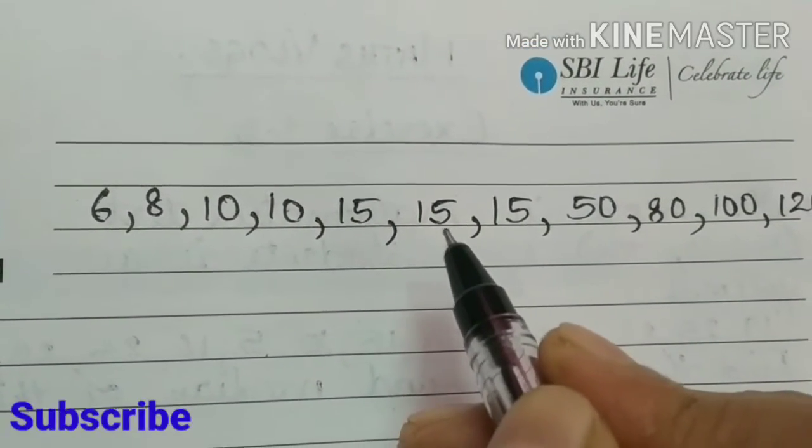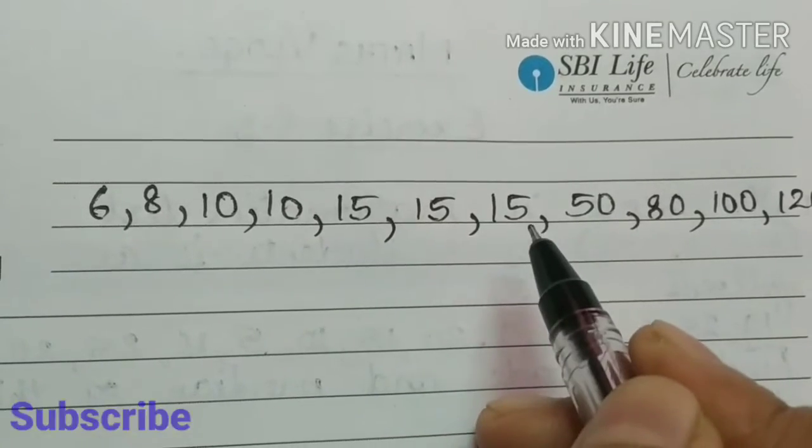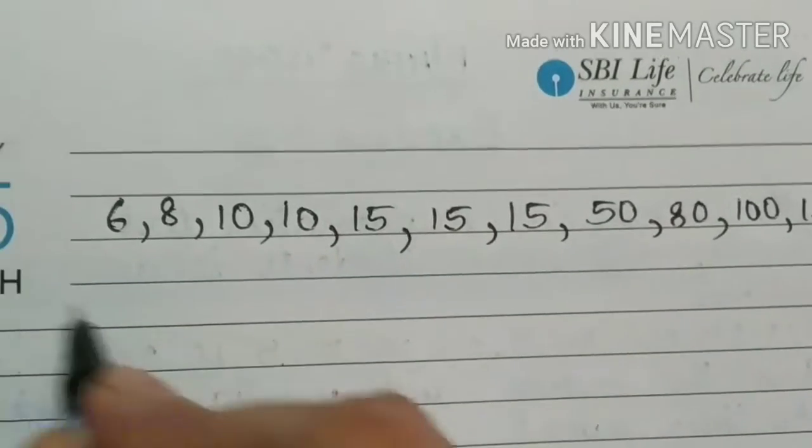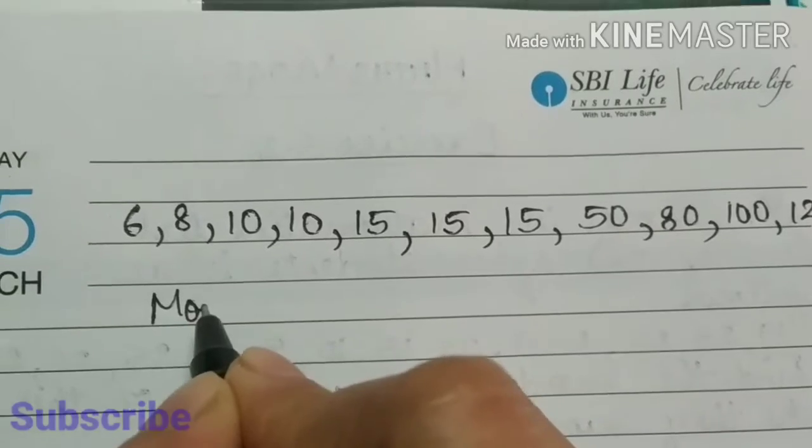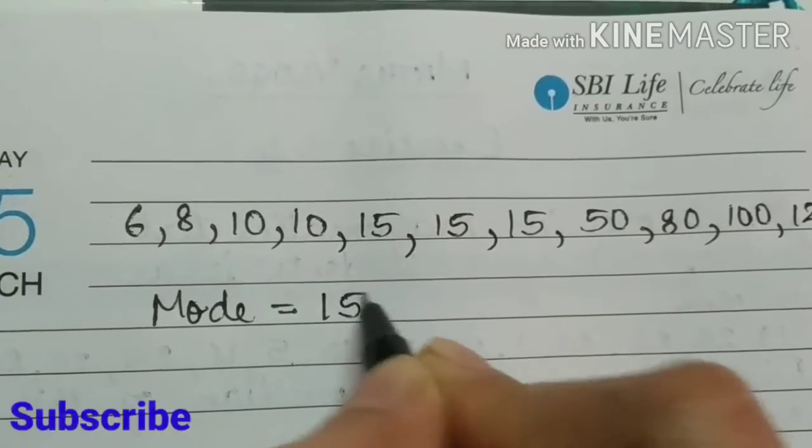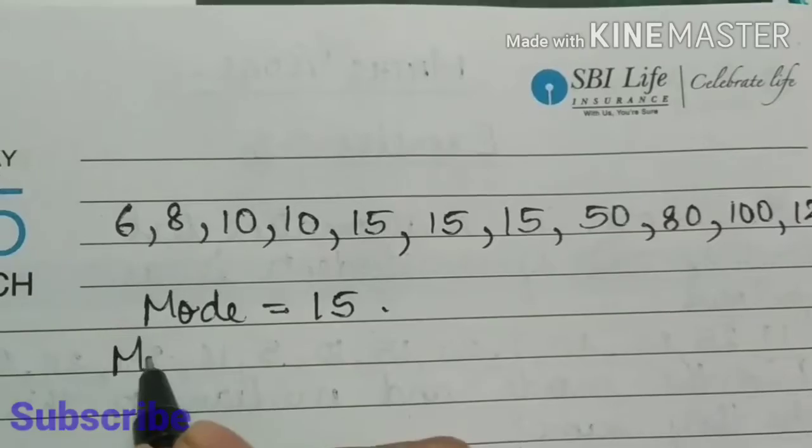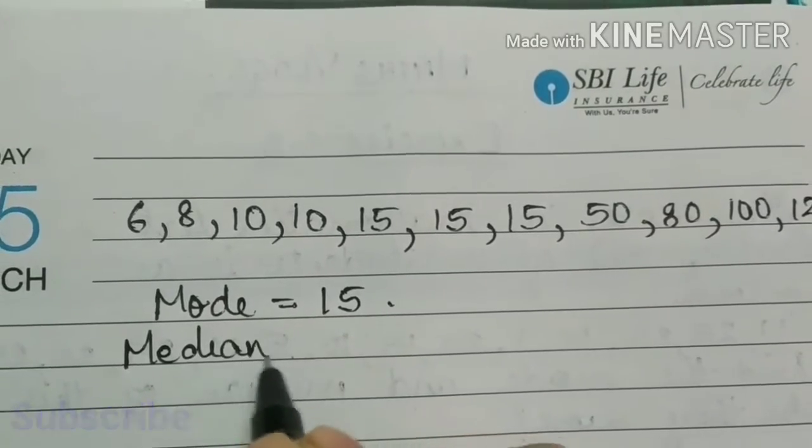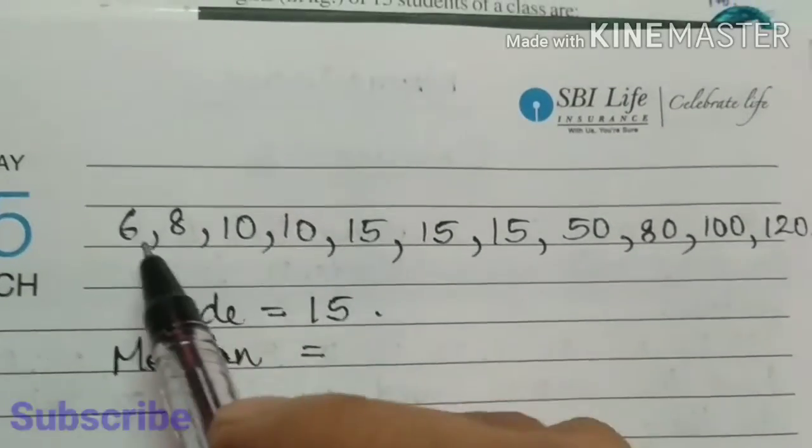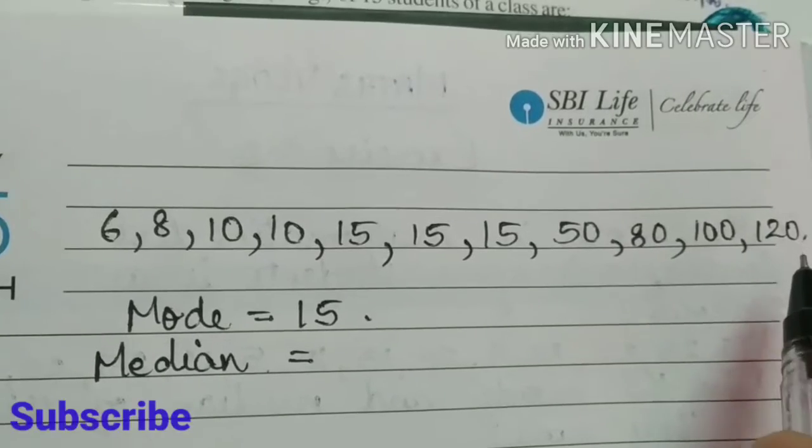We studied mode is the observation that occurs most often. Here we can see 15 is given 3 times, so mode is equal to 15.